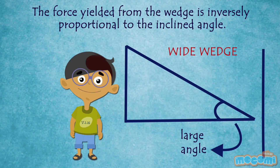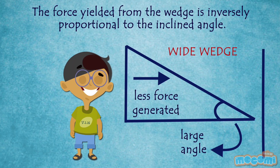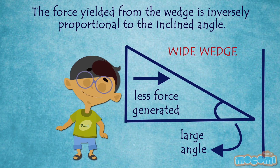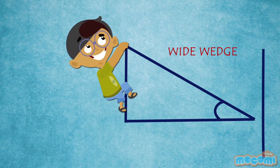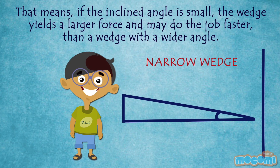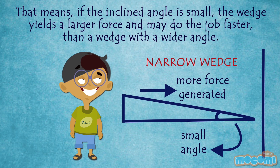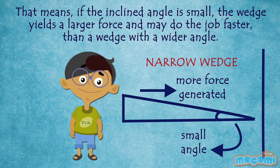The force yielded from the wedge is inversely proportional to the inclined plane. That means if the inclined angle is small, the wedge yields a larger force and may do the job faster than a wedge with a wider angle.